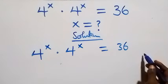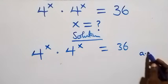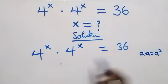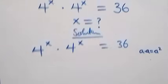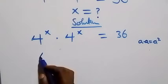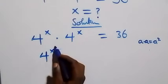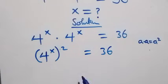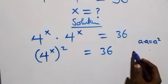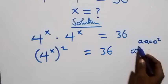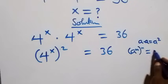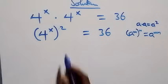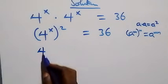When we have a times a, we can write this as a squared. So multiplying here, we can write this as 4 raised to power x, all squared, equals 36. And from here, when we have a raised to power m, raised to power n, this can be written as a raised to power m·n. So this becomes 4 raised to power 2x.